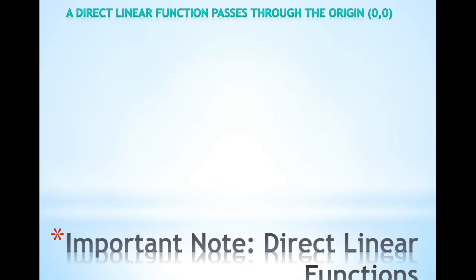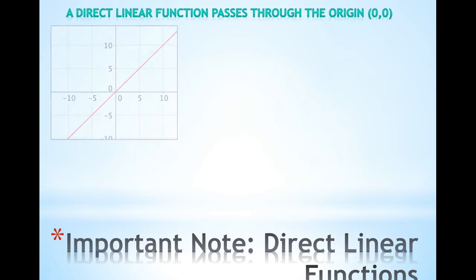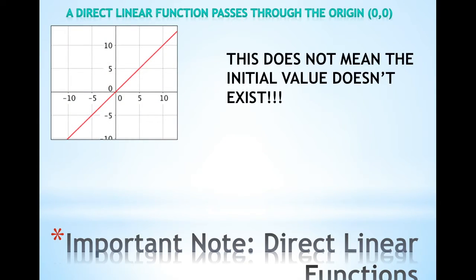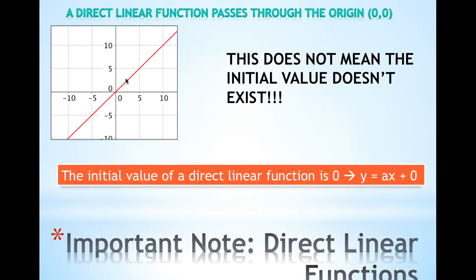A direct linear function passes through the origin, or the coordinates are (0, 0), something like this. This does not mean that the initial value doesn't exist. The initial value does exist — it's just zero.